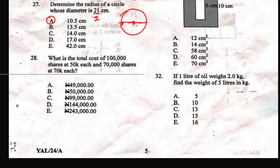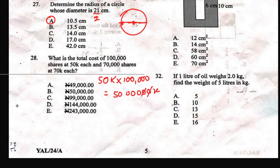Question 28: what is the total cost of 100,000 shares at 50 kobo each? The total cost of 100,000 shares at 50 kobo each would be 50 kobo times 100,000, which gives us 5,000,000 kobo. To change this to naira, cancel out two zeros. So the answer will be 50,000 naira — that's the worth of the 100,000 shares.